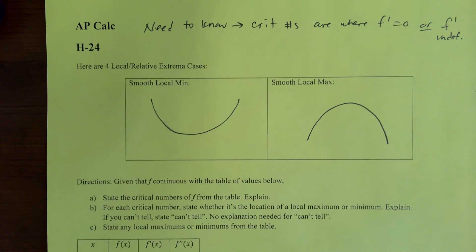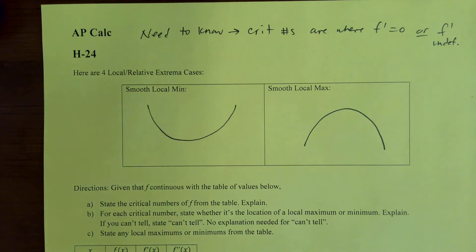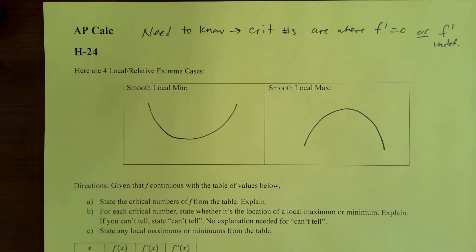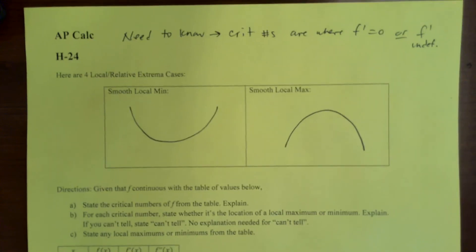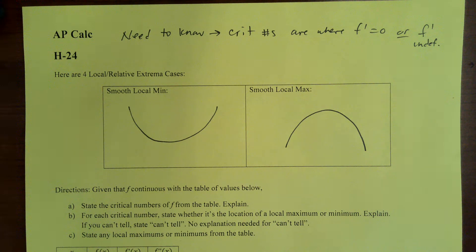Here's problem 24. Something we need to know for this is that critical numbers are where F prime is equal to zero or F prime is undefined. There's a little table next to Susan's table that includes and talks about that information.